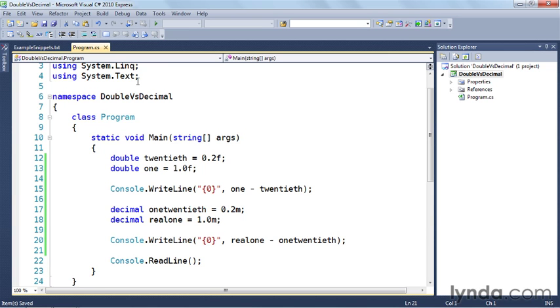And I'm going to show you a difference of how decimals are handled versus how doubles are handled. So right here at the top of my function, I've got two variables, twentieth and 1. And you can see that I've defined twentieth and 1 to be types double. And so I've got 0.2f and 1.0f. And what I'm going to do is write out what 1 minus twentieth is. So 1.0 minus 0.2, you would expect that to be equal to 0.8, right?